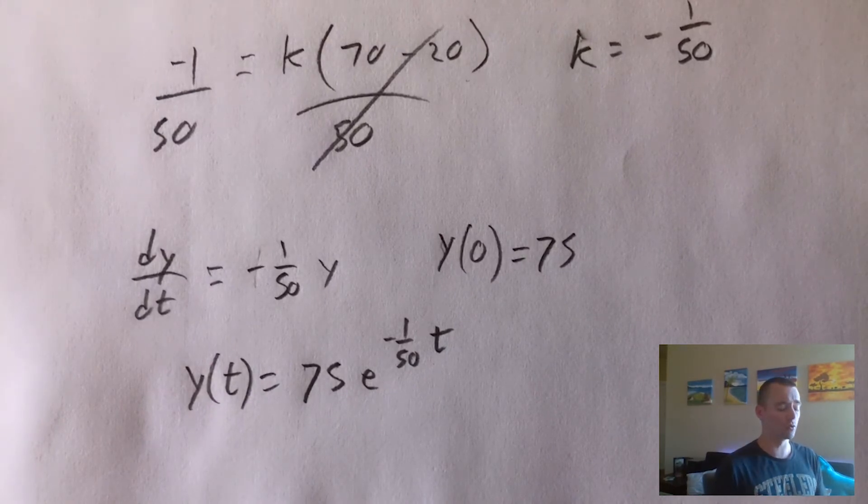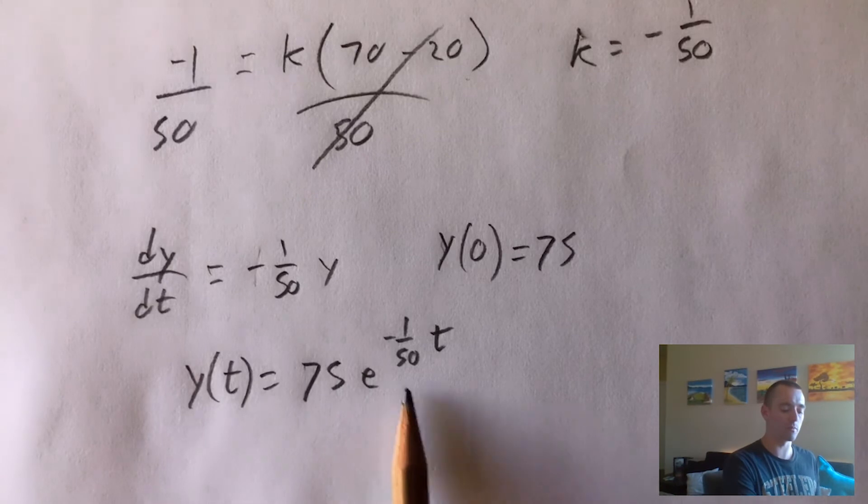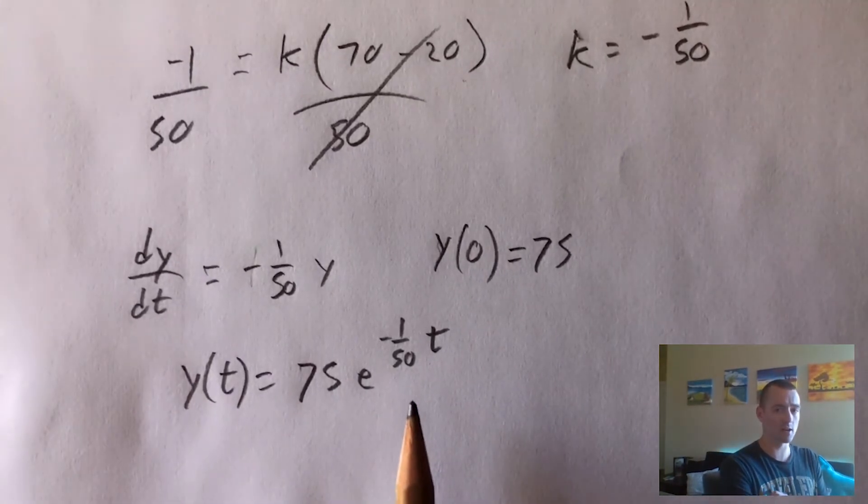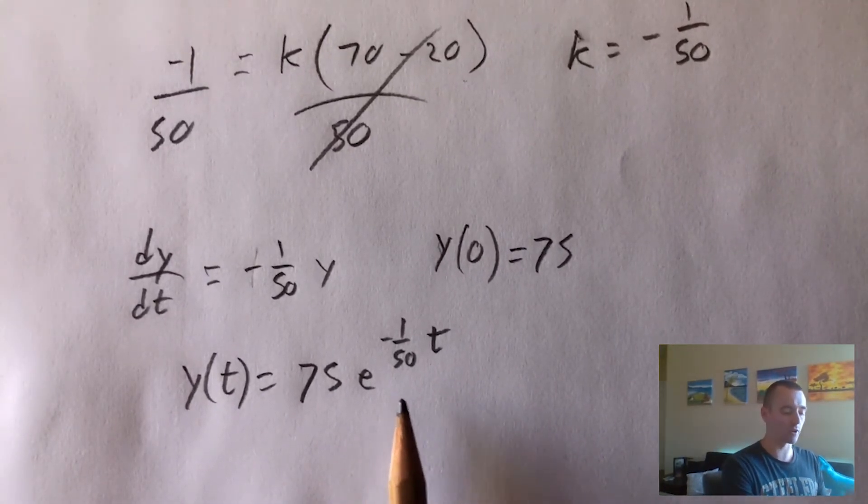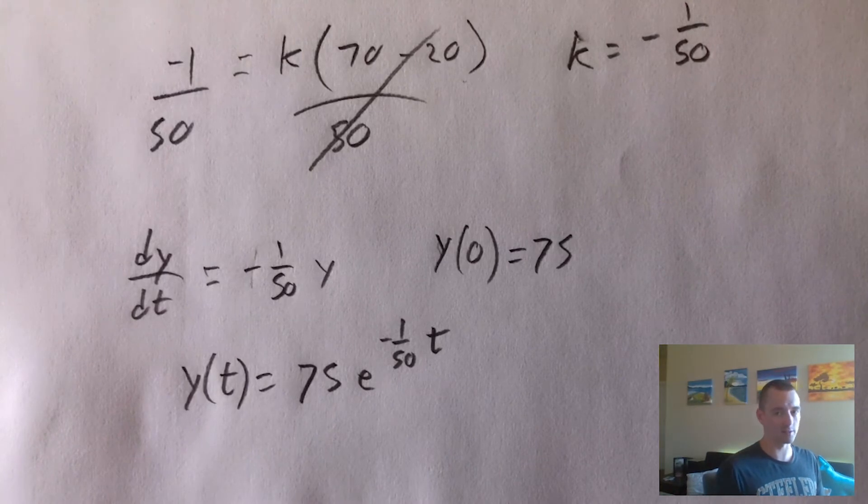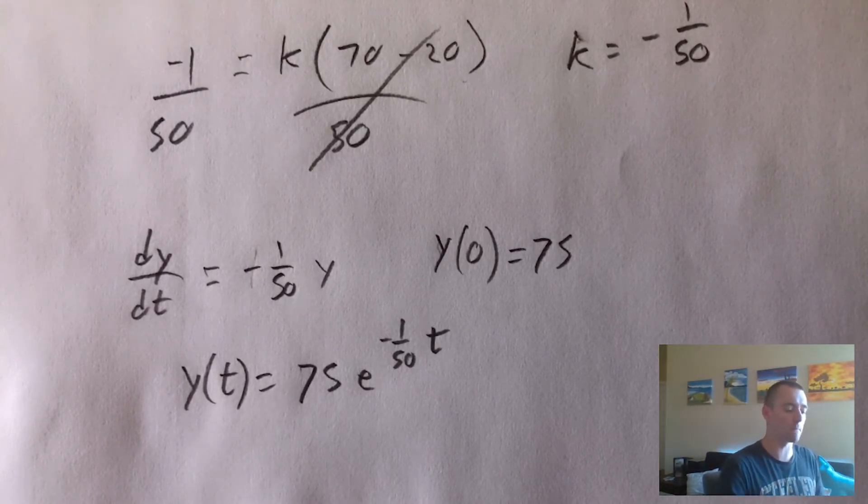Typically with these Newton's law of cooling problems, you have to get it into this form, you would still have an unknown constant K here, and use this to solve for K. But in this case, like I said, this one's a little different. We already know our K. So we can go straight from this point back to our equation for temperature of the coffee.